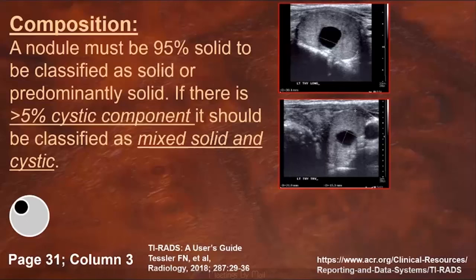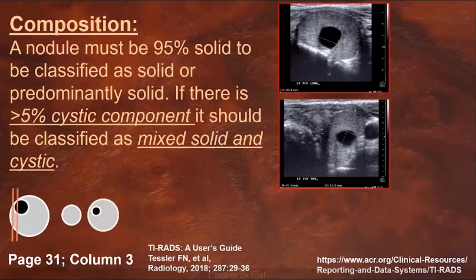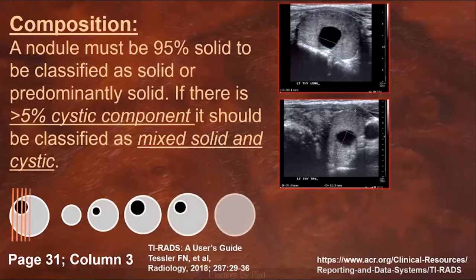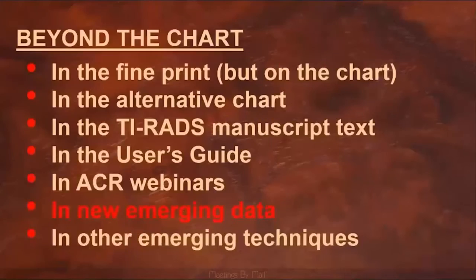With respect to nodule composition, the user's guide indicates that a nodule must be 95% solid to be classified as solid or predominantly solid. If there is a greater than 5% cystic component, it should be classified as mixed solid and cystic. These images show a nodule with a single prominent cystic component that involves greater than 5% of the area on two images. But composition is based on the entire volume, so you need to integrate all of the slices through the nodule. In this particular case, when the volumes were calculated for the nodule and the cyst, this turned out to be almost exactly 5% cystic composition, so it just barely qualifies as predominantly or entirely solid.